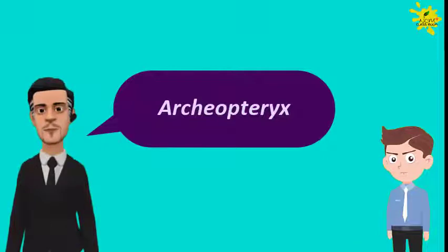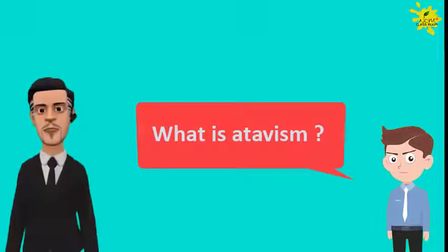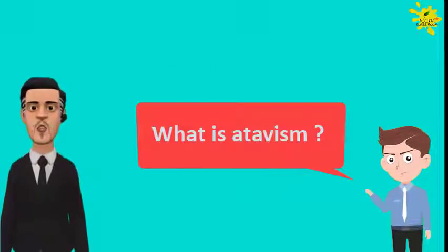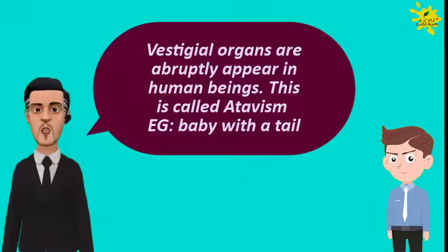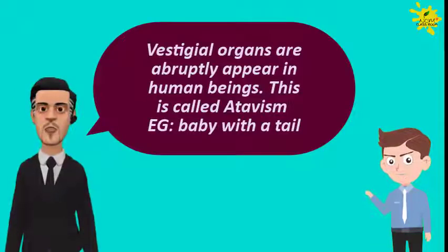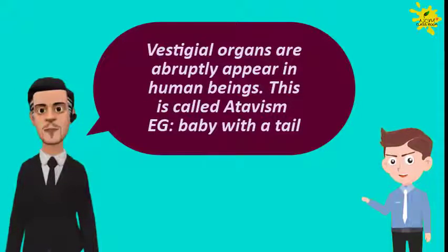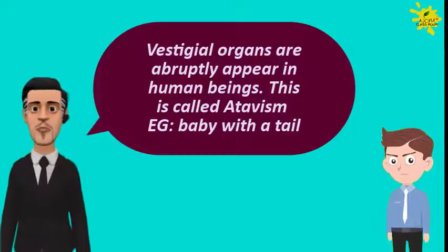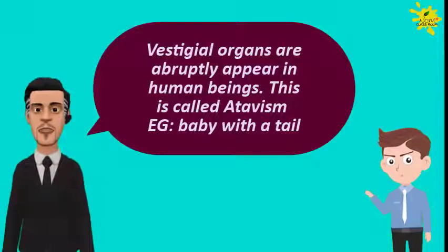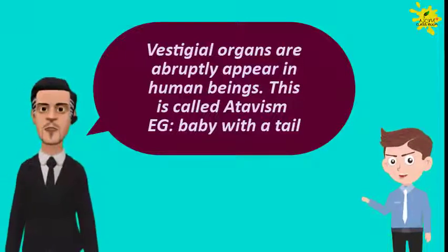What is atavism? Vestigial organs that abruptly appear in human beings — this is called atavism. Example: a baby with a tail.